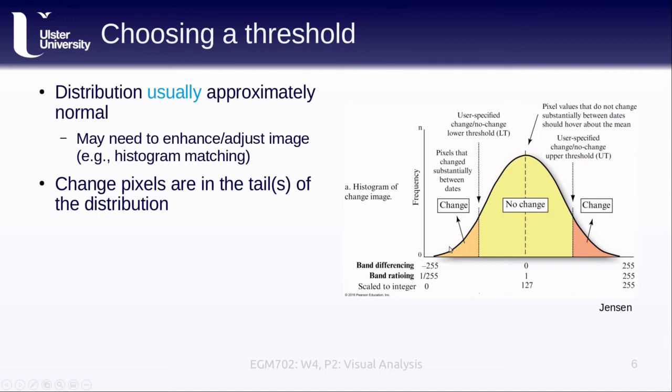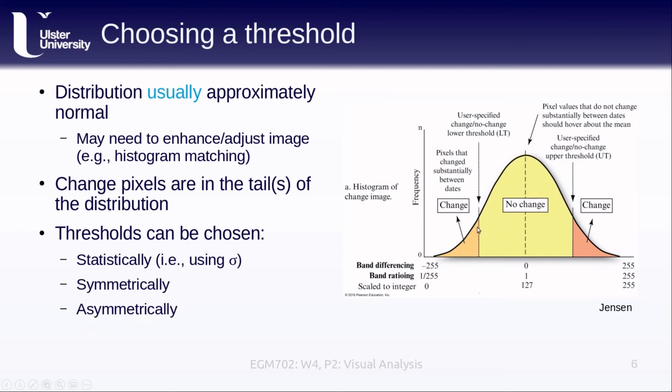So when we're looking at the distribution of differences or the distribution of band ratios, the change pixels, that is the pixels where there's actually a difference between the two images, are going to end up in the tail of the distribution. And we can select the threshold or we can determine where those tails begin in a number of different ways. We could, for example, think of this statistically using the standard deviation around the mean. So if we choose a threshold of plus or minus one standard deviation, we might see a threshold that comes about here in our distribution. Two standard deviations is going to be a bit further away and so on. We can also choose these symmetrically so that they're located in the same place on either side of our mean difference or our mean band ratio. Or we can choose them asymmetrically where we have different thresholds depending on whether it falls above or below the mean.